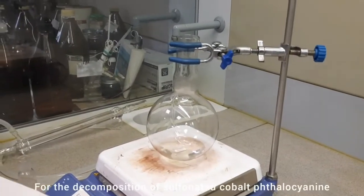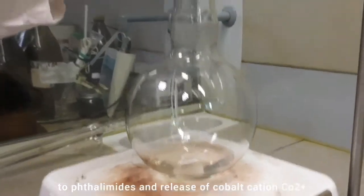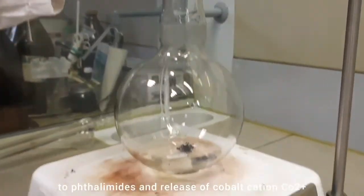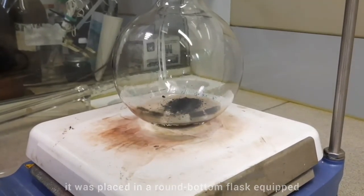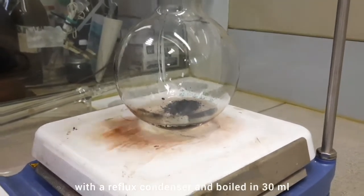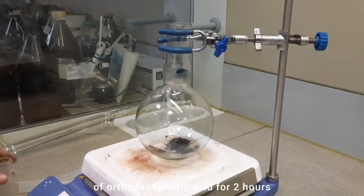For the decomposition of sulfonated cobalt phthalocyanine phthalimides and release of cobalt cation Co2+, it was placed in a round bottom flask equipped with a reflux condenser and boiled in 30 ml of orthophosphoric acid for 2 hours.